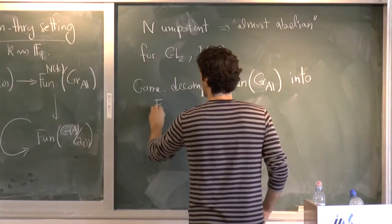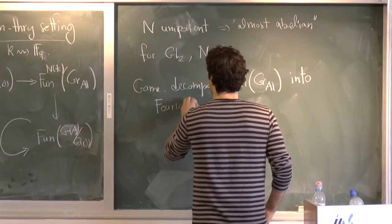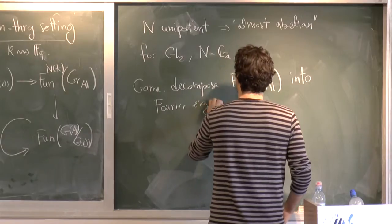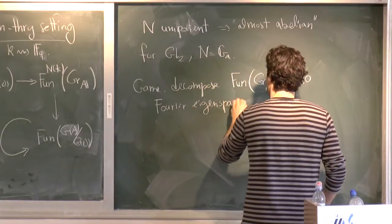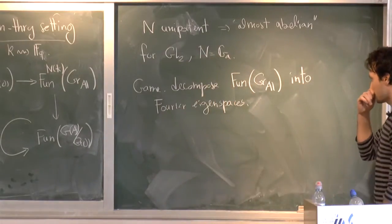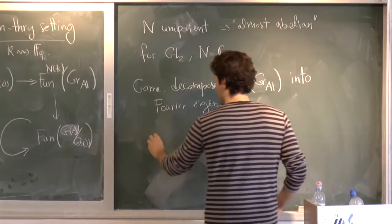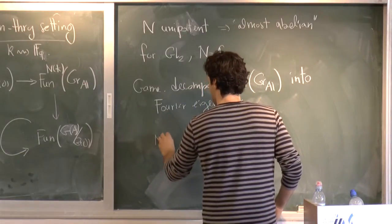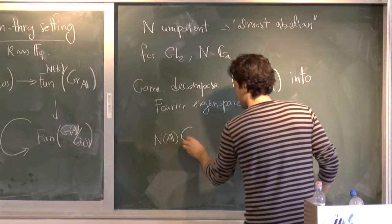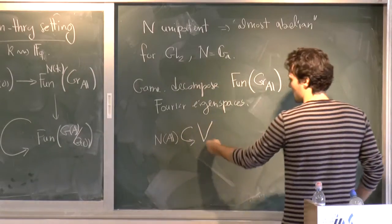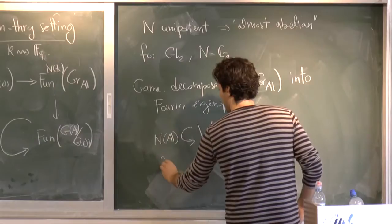So now the game is decompose functions on adelic Grassmannian into Fourier eigenspaces. So what does it mean if, so say if N of A,